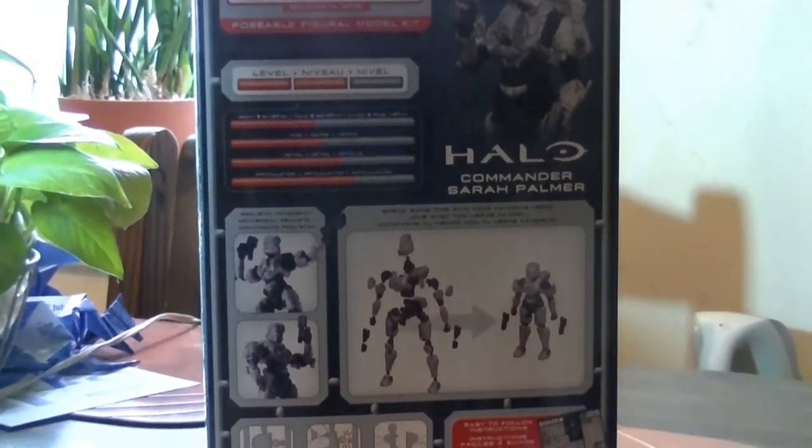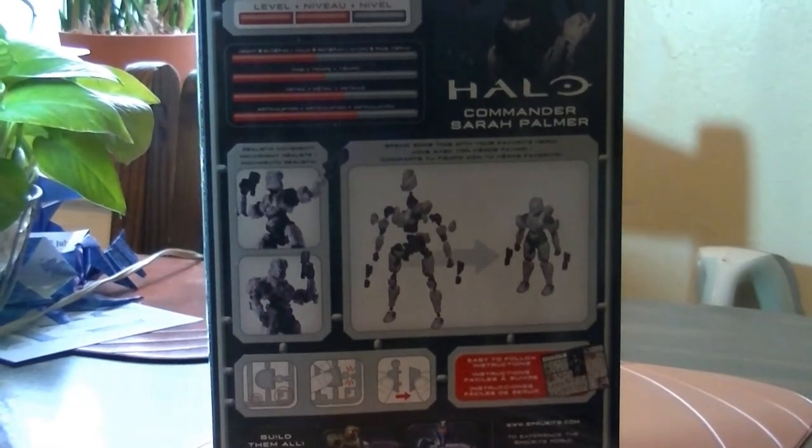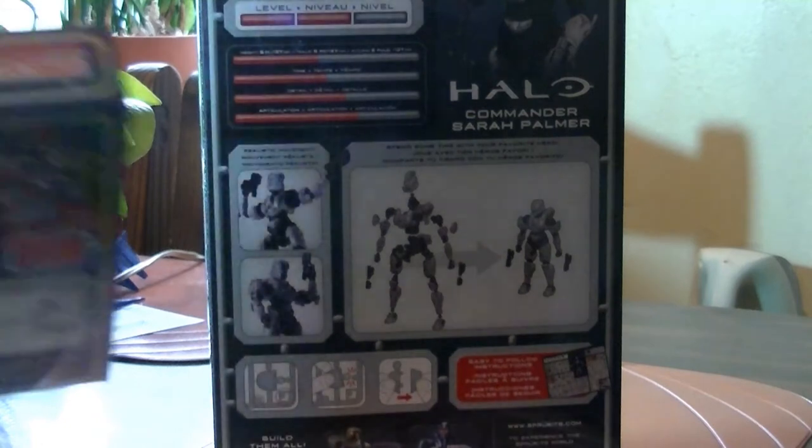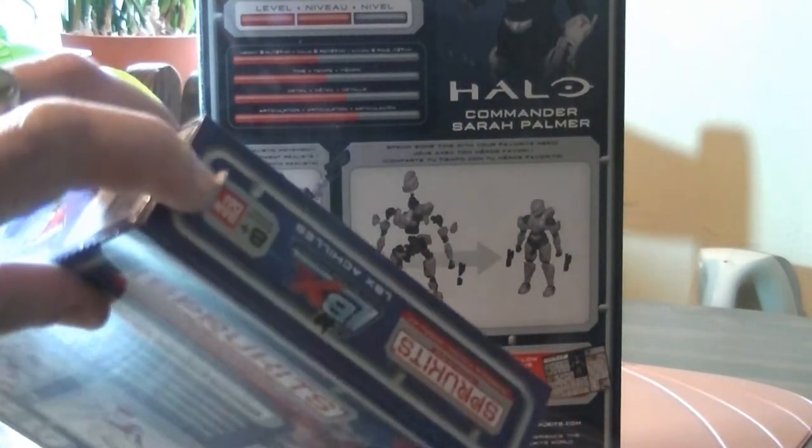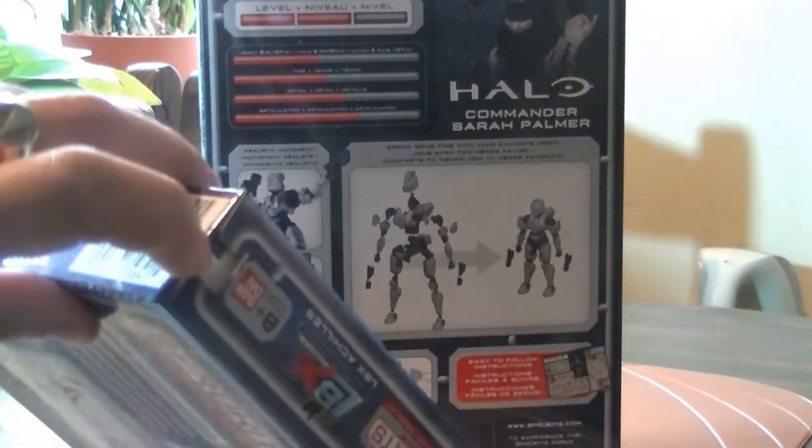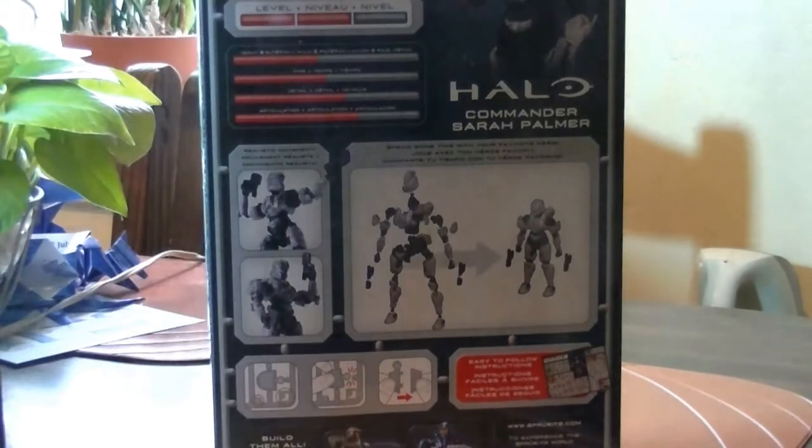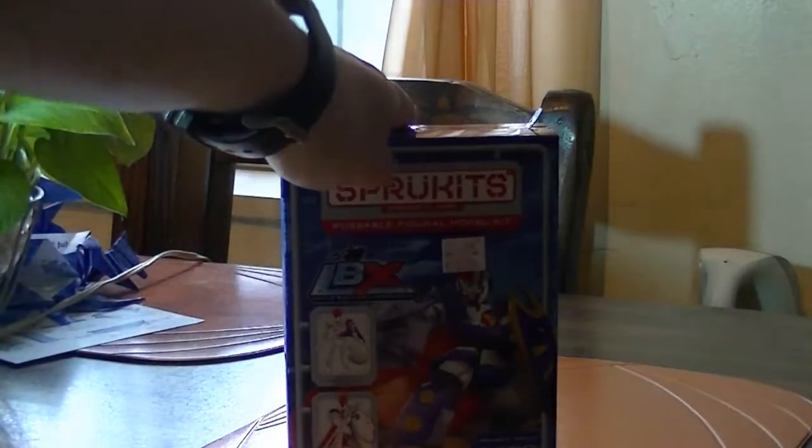This is the kind of thing where the assembly instructions are on the inside of the box, so you have to be careful when you open it. There's a perforated line here at the top that you're supposed to pull on, and then the box will open up into a flat sheet with the instructions. So, let's get the big kit out of the way, and I'm going to build this little one on camera.